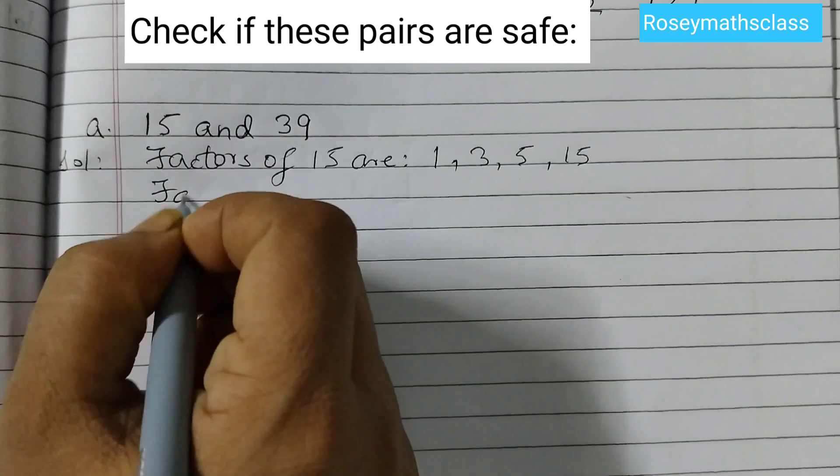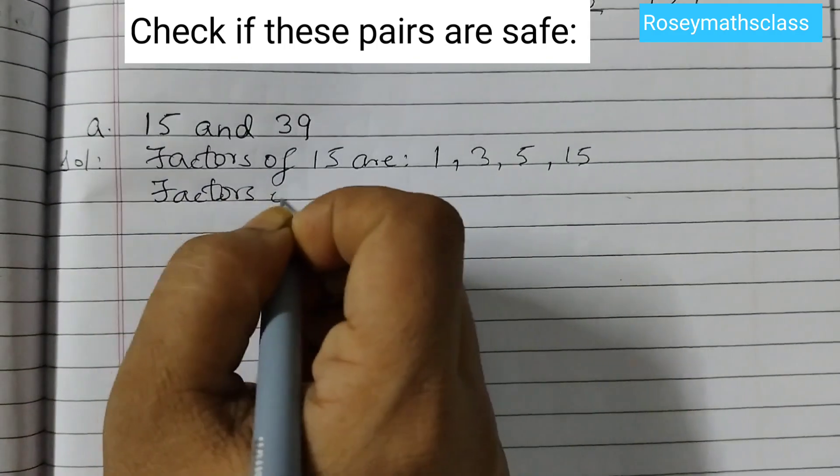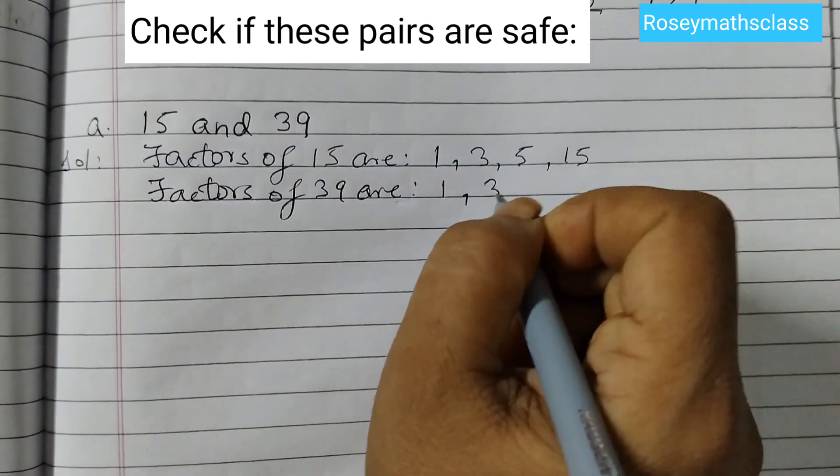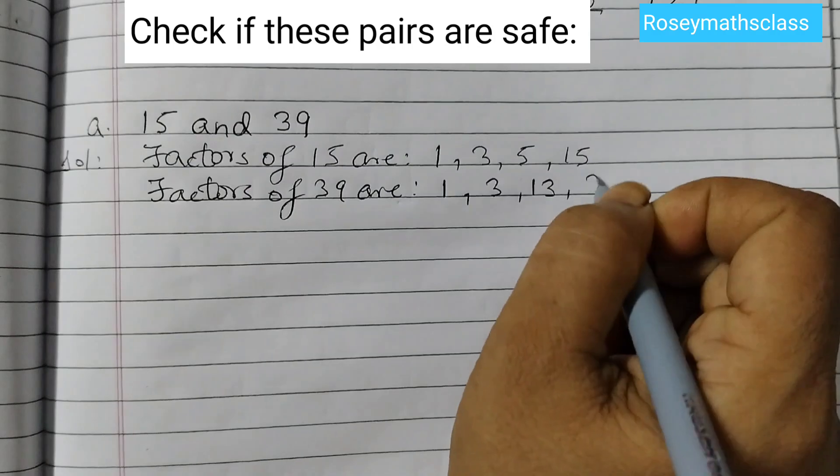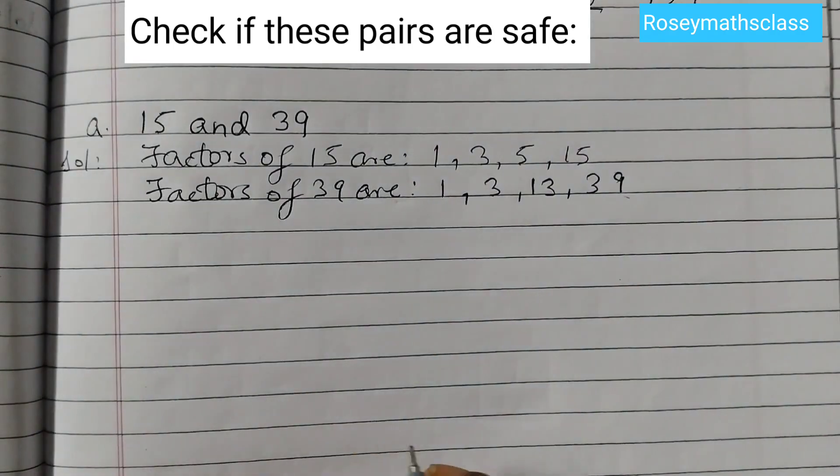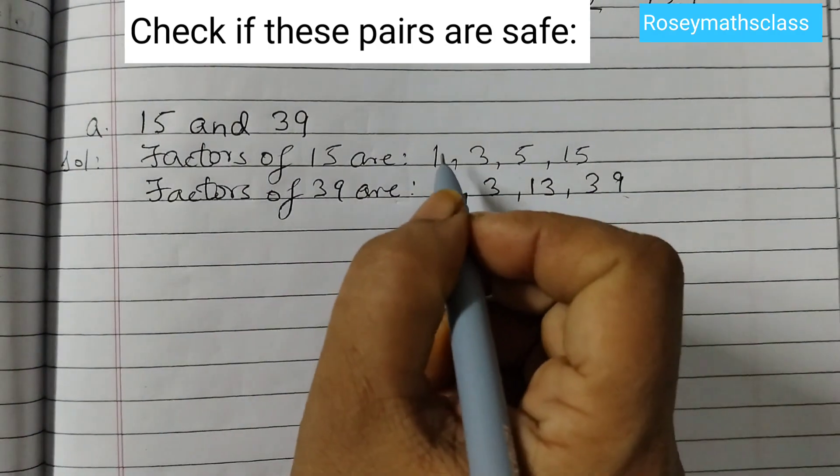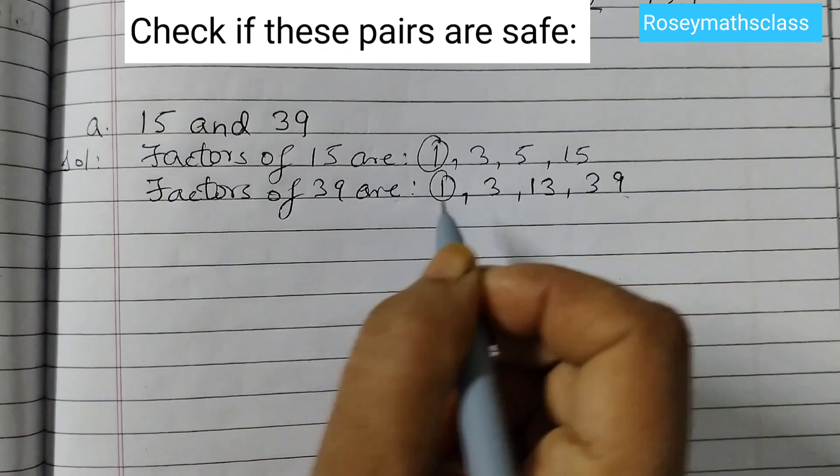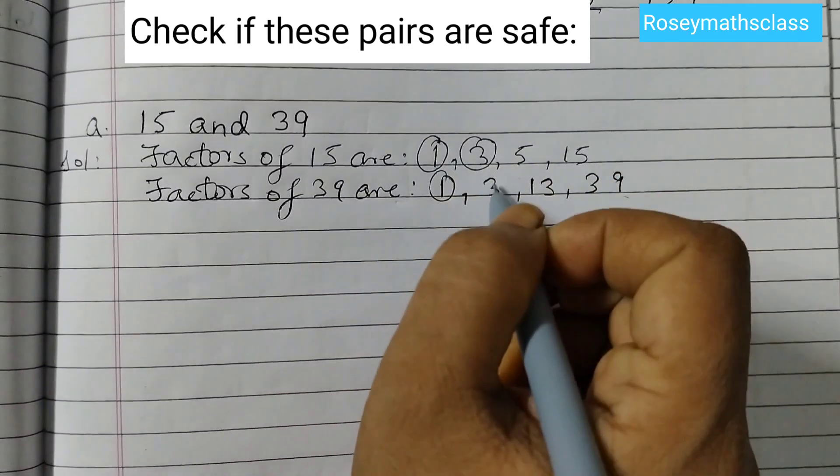Factors of 39 are 1, 3, 13, and 39. Now look at the common factors. The common factors are 1 and 3.